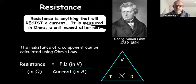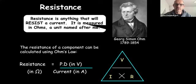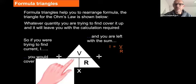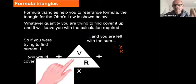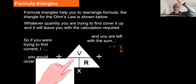You absolutely need to know this equation. The resistance component can be worked out using Ohm's Law — we measure the potential difference, we measure the current, and that allows us to work out resistance. Last week I talked about the formula triangle. The reason we use a formula triangle is it makes it really easy to rearrange. V is on top, I and R are below. V equals IR — whatever comes in front of the equals sign goes on top, the other two go on the bottom.